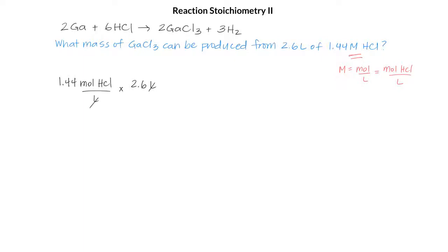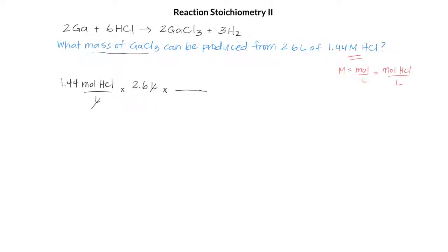And now let's use the mole ratio of HCl to gallium chloride because we're looking for the mass of gallium chloride. So we'll put our moles of HCl on the bottom. According to the balanced equation, 6 moles of HCl produce 2 moles of gallium chloride. So our moles of HCl cancel, and we're left with moles of gallium chloride. And now we can convert those moles into grams to get a mass.